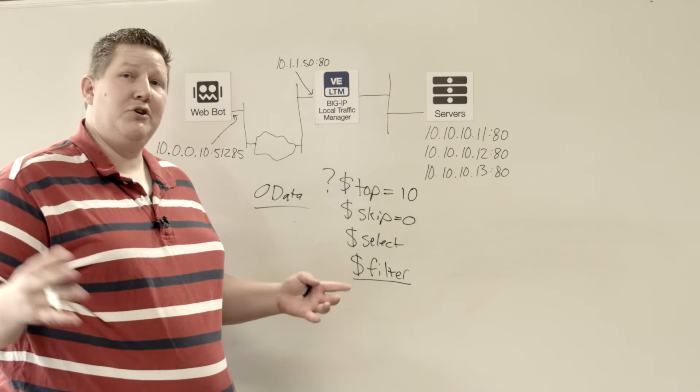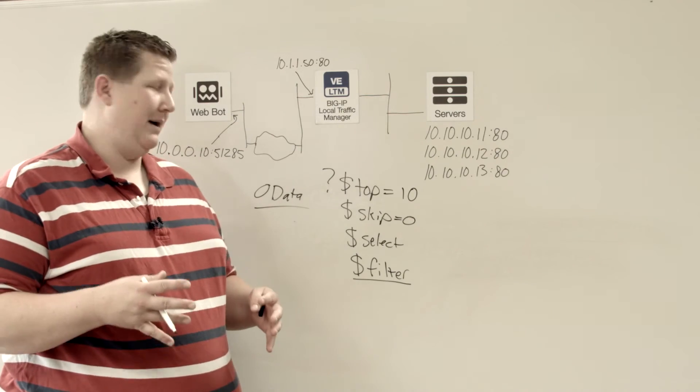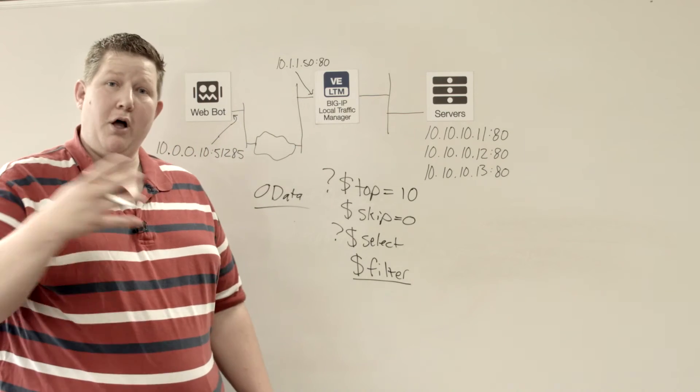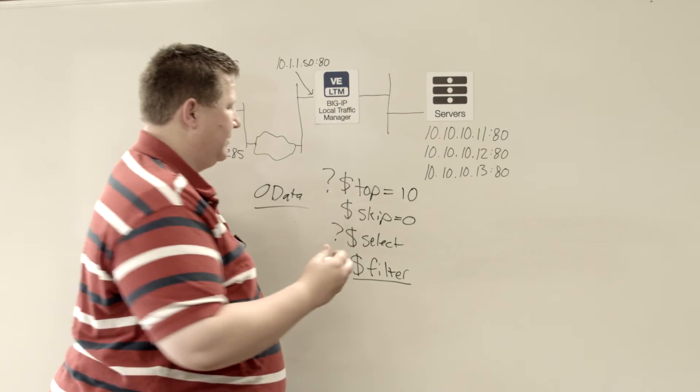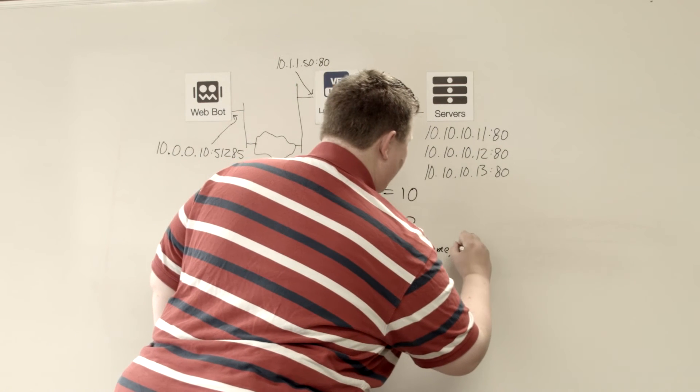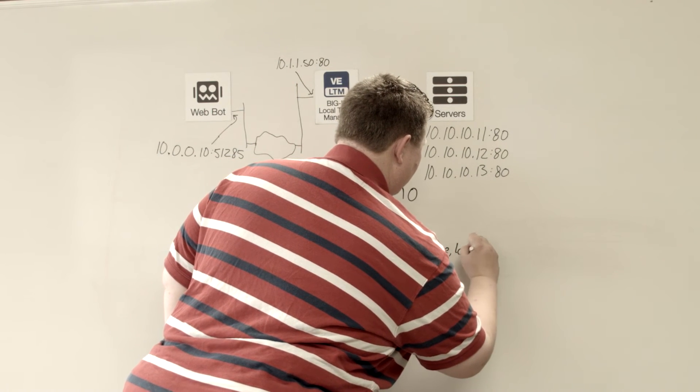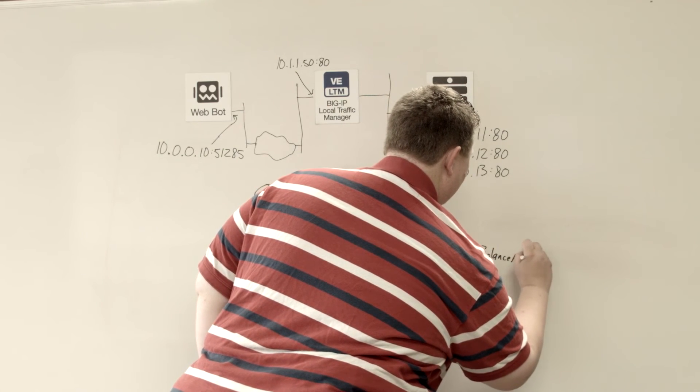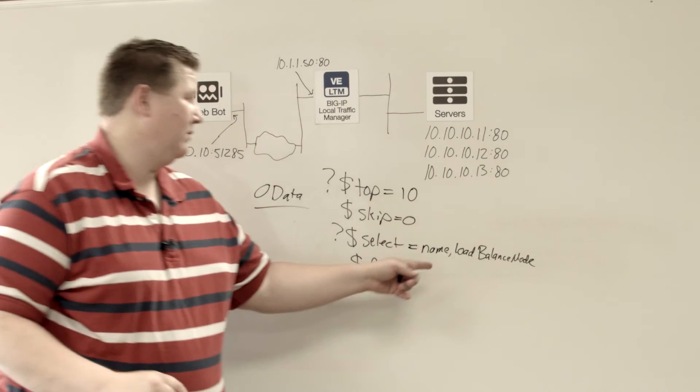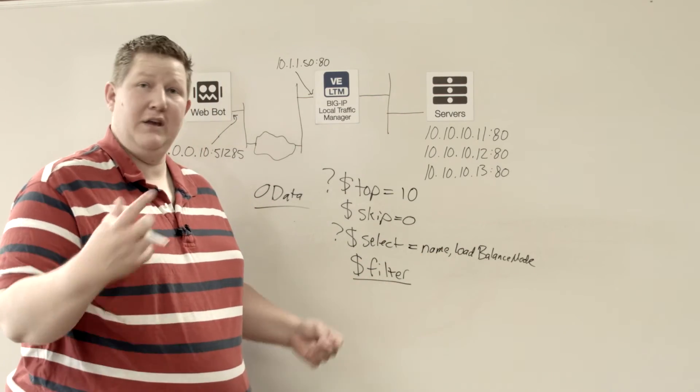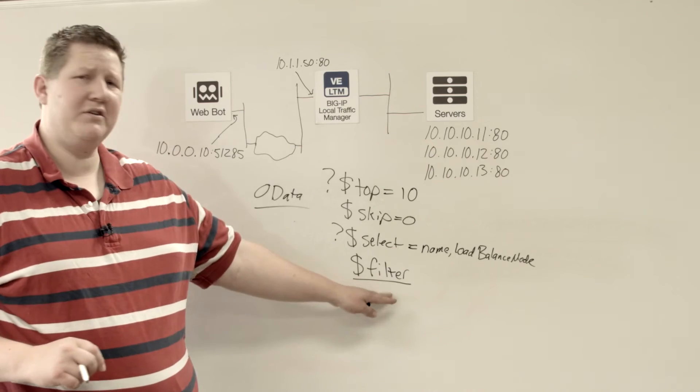Select allows you to narrow down the amount of data you get per object. So if you provide a select, say you want to pull all the pools back, but you only want the name of the pool and say you want the load balance mode. So when you do this, then when it returns the data set to you, it's only going to give you the name and the load balance of each pool.